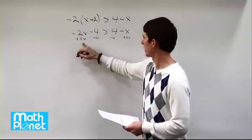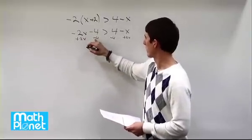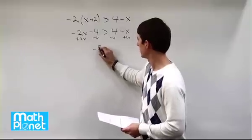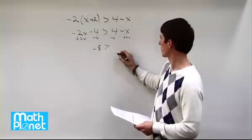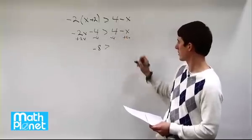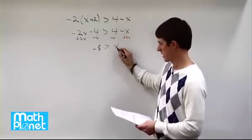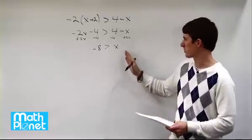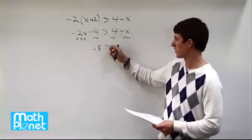This gives us over here negative 4 minus 4 is negative 8, is greater than 4 minus 4 is 0. Negative x plus 2x gives us x. And there we've just jumped straight to the end using two steps at once here.